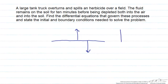Let's set our coordinate system where positive z is going to be in the upward direction. This is an example of an unsteady state diffusion problem. How do we know? Because the fluid is being depleted both into the air and into the soil — it's not an instantaneous process.